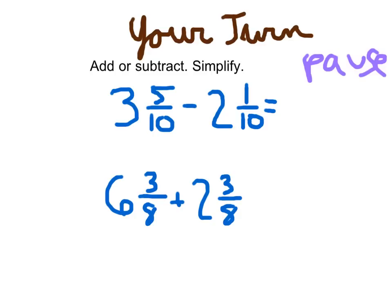All right, starting with that first one. Oh, it's a subtraction problem. Three minus two is one. And then we have five-tenths minus one-tenths, which equals four-tenths, which does simplify to one and two-fifths.